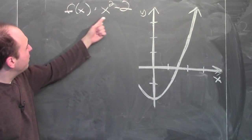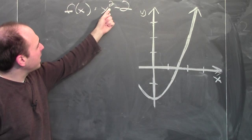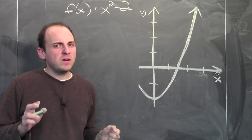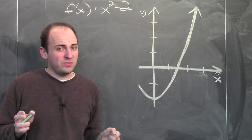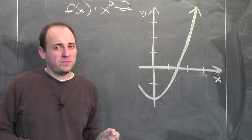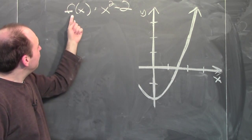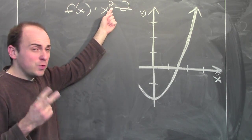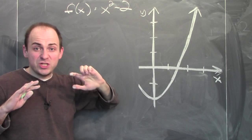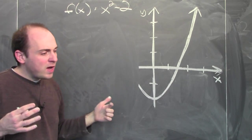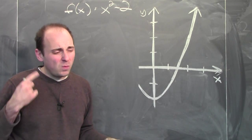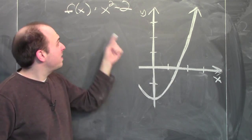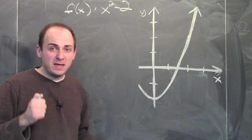To do that, I'm going to use this function: f of x equals x squared minus 2. Notice something about this function — it equals 0 when x is the square root of 2. Because f of the square root of 2 is the square root of 2 squared, which is 2, minus 2, which is 0. So if I'm trying to approximate the square root of 2, I'm looking for a positive value I can plug into this function to make it equal to 0.